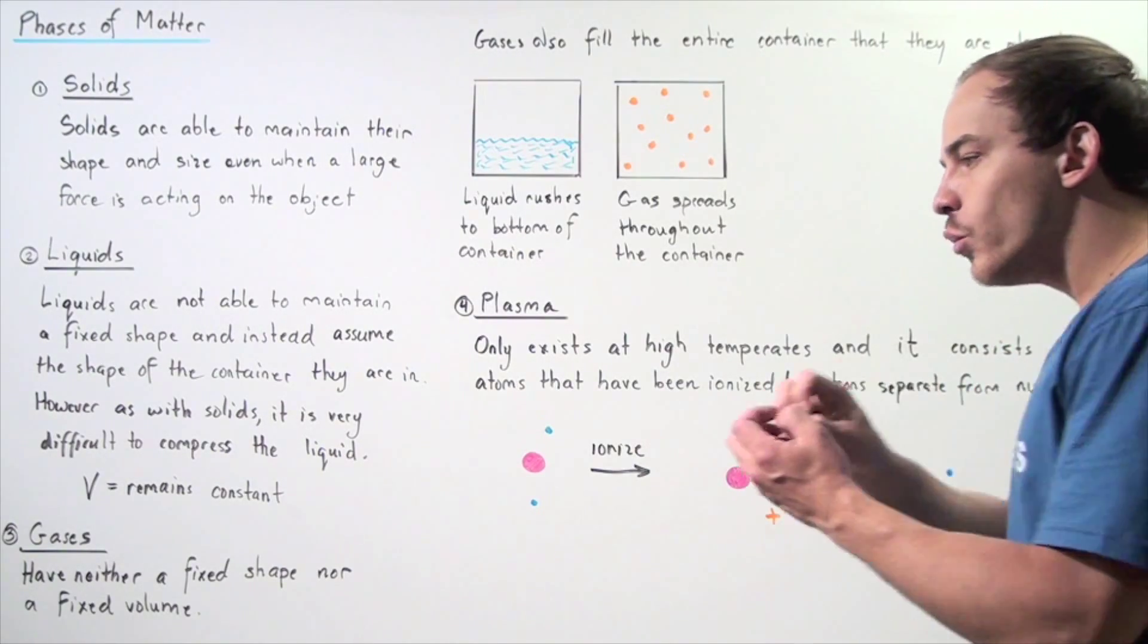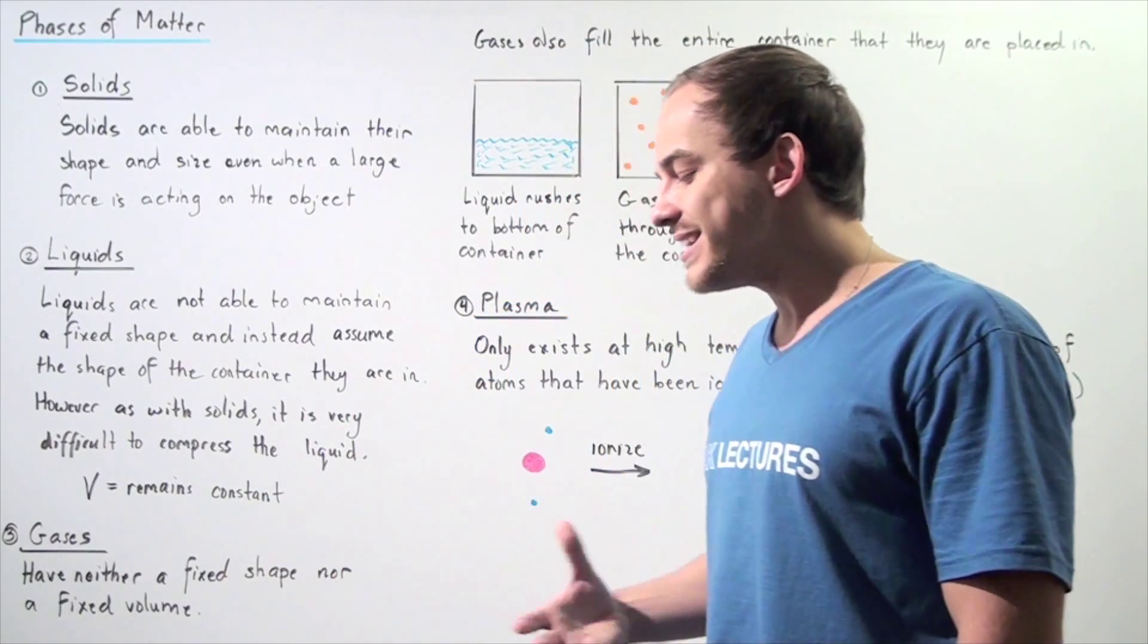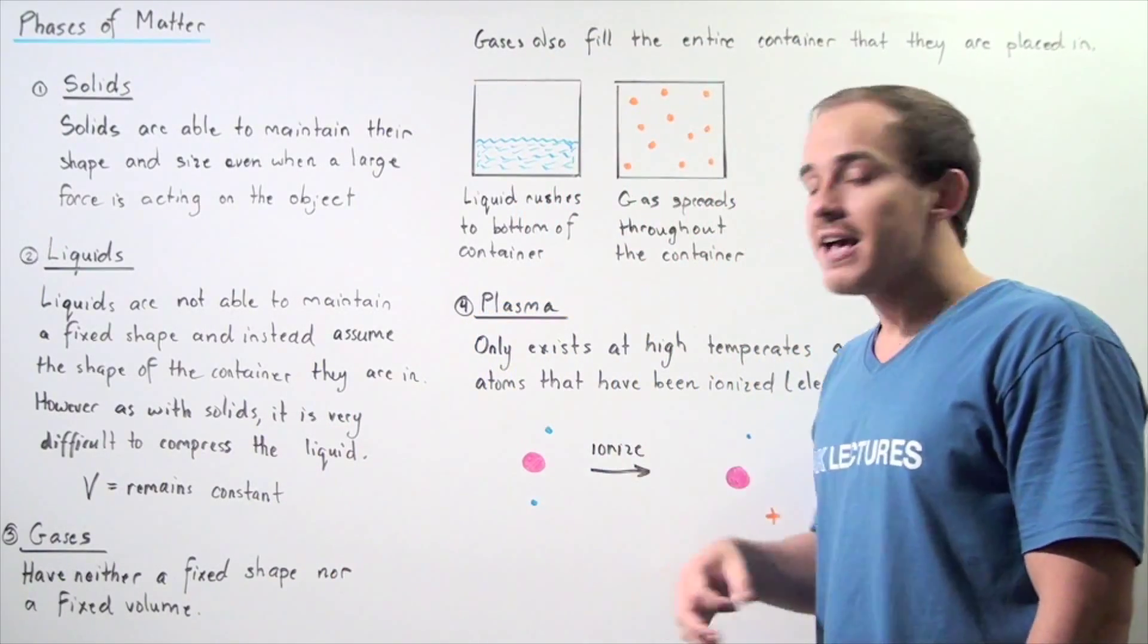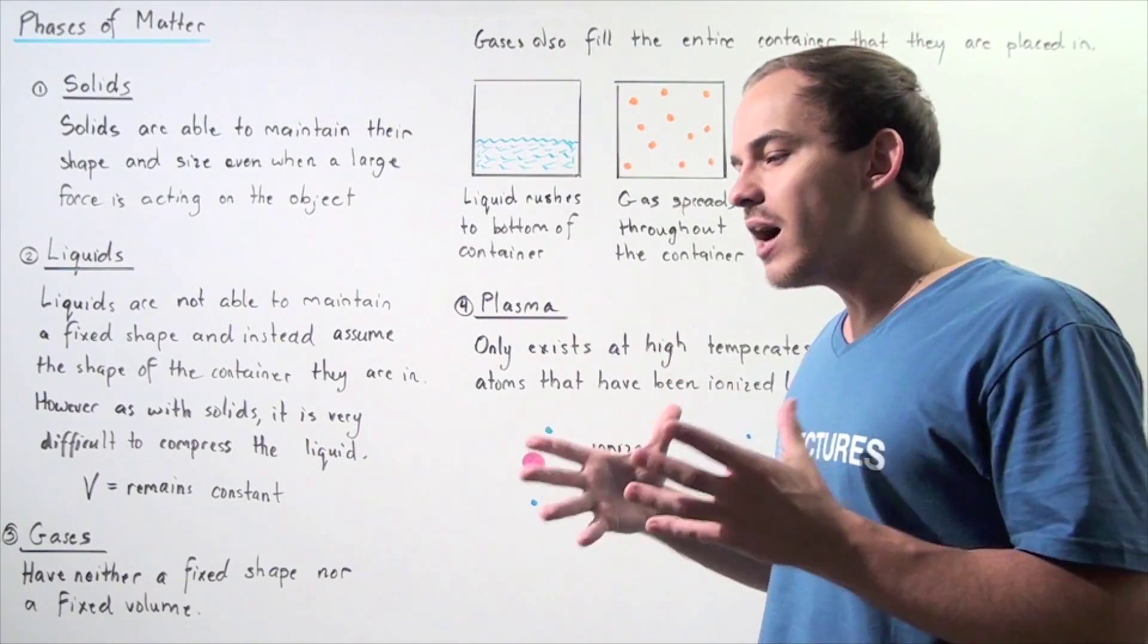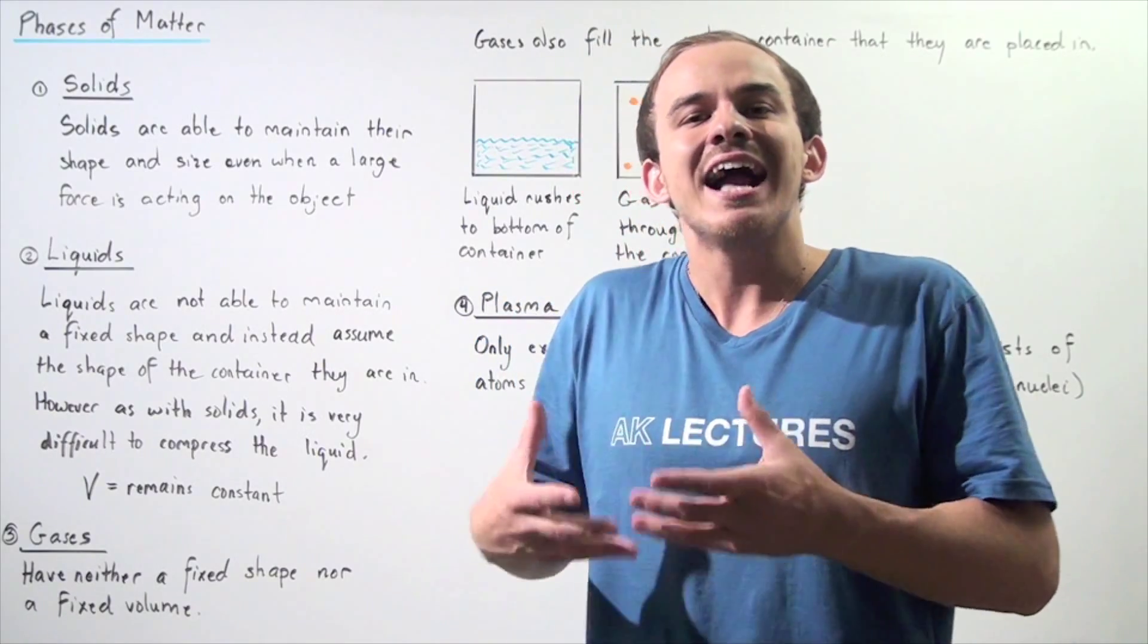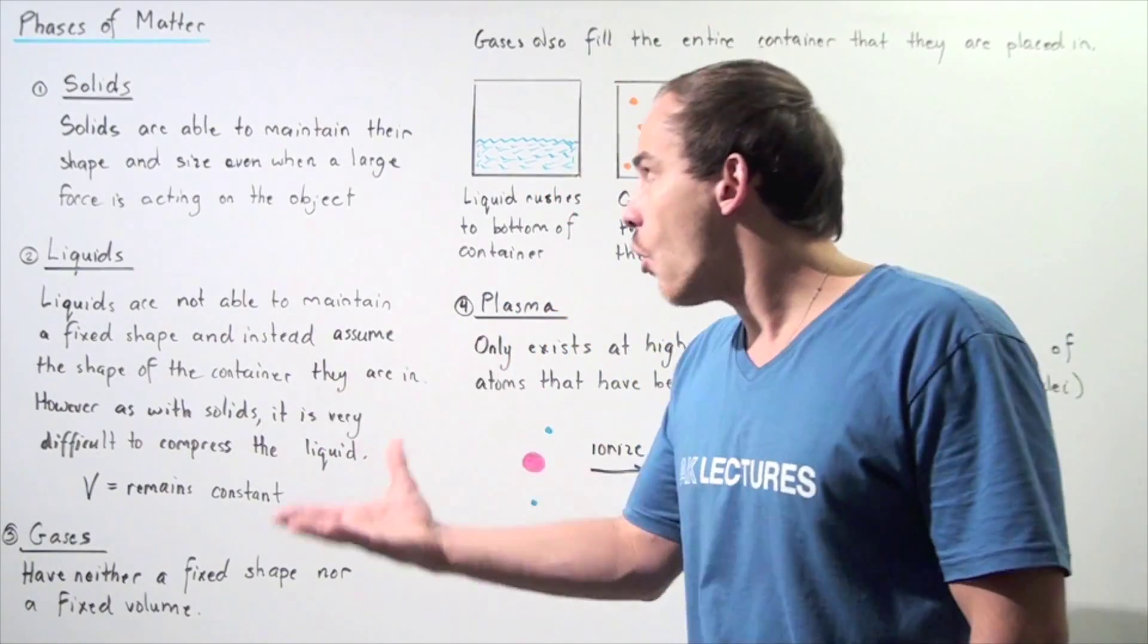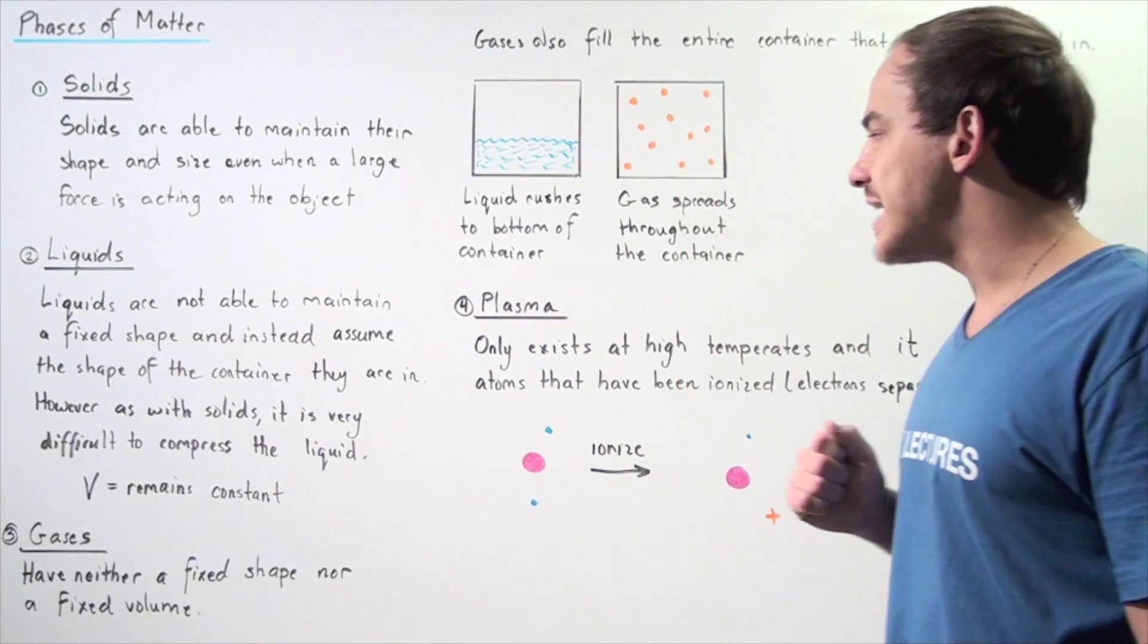In other words, we took away electrons from those atoms. Now, a very common example of plasma is on the sun. So, the sun has very high temperatures and this creates, this ionizes the atoms on the sun creating this fourth phase of matter known as plasma.